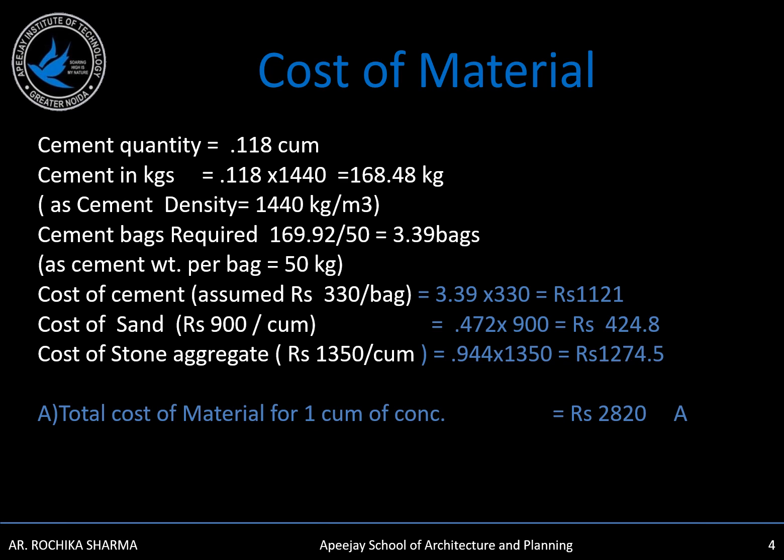Cost of sand, assuming Rs. 900 per cubic meter, we will get cost of sand as Rs. 424.8. And cost of stone, assuming Rs. 1350 per cubic meter, it will be Rs. 1274.5. We can take these rates of cement, sand, and stone from the schedule of rates and apply a cost index, because the DSR (Daily Schedule of Rates) was published in 2019 and we need to apply the government-notified cost increases to get updated rates. Total cost of material will be Rs. 2820.